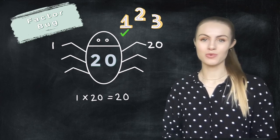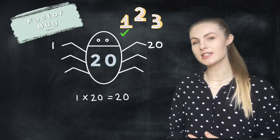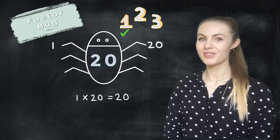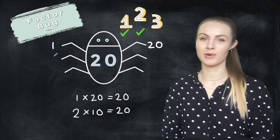Now we're going to look at 2. Is 2 a factor of 20? Or in other words, is 20 in the 2 times table? Yes it is. 2 times 10 equals 20. So we're going to put them on next on our factor bug.